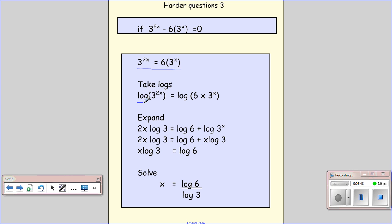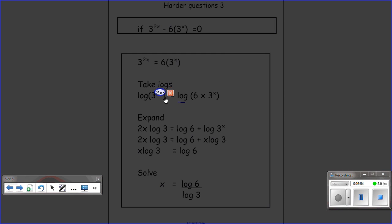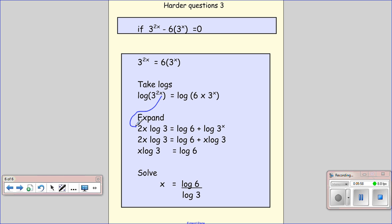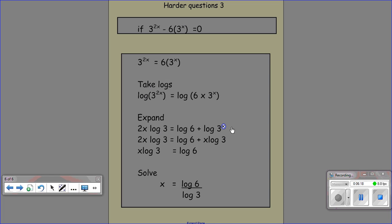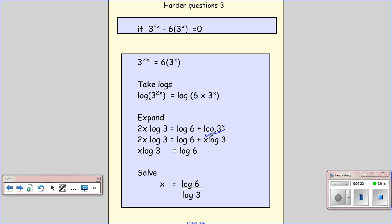Then again, we can take logs of both sides. And then we can use some of our rules. We have log of something with a power in it, we can take that power out. Then we've got a log of something multiplied, and we can split that up into the two things and add them together. So log of 6 plus the log of 3 to the X. And then we have 3 to the X, which is a power, we can take that and put it out in front. So we've got X log 3. Now we just do a bit of sorting out. We have 2X log 3 equals log 6 plus X log 3. We can take X log 3 from both sides, gives us X log 3 equals log 6. So X will equal log 6 over log 3.